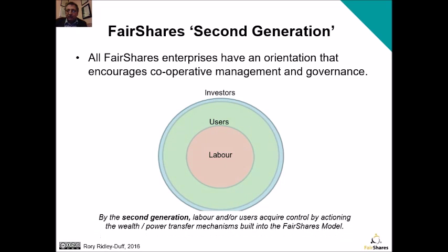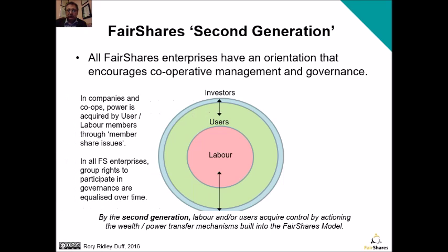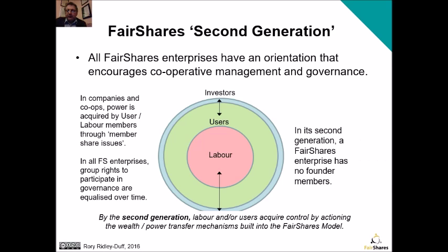In a second-generation fair shares enterprise, many of the investor shares will now be owned by users and labour, so you begin to see different patterns of ownership. Labour and users acquire control by actioning the power transfer mechanisms built into the fair shares model. Both users and labour can acquire shares through what's called a member share issue — each time the enterprise generates a surplus, some of that surplus is used to acquire investor shares for users and labour members. In the second generation, the enterprise has no founder members and the bulk of ownership is held by its users and labour shareholders.